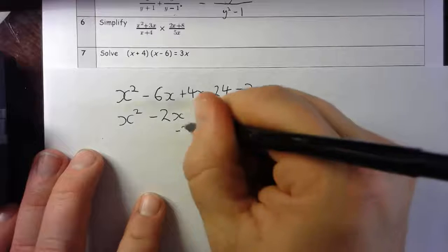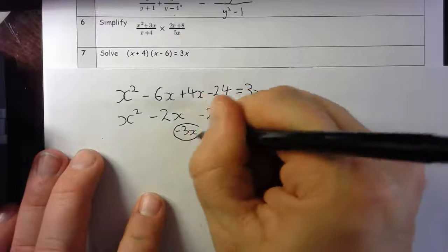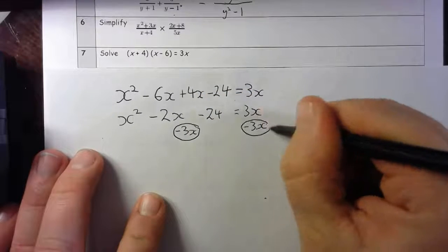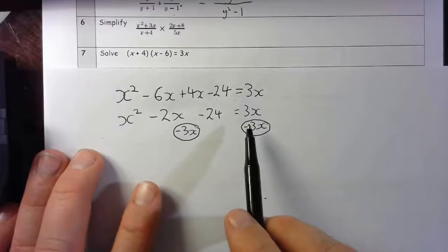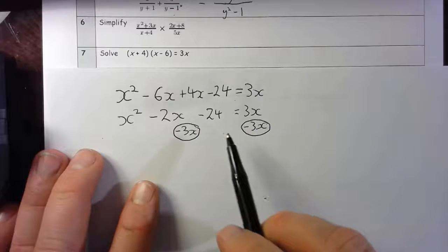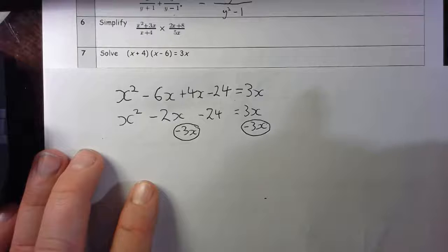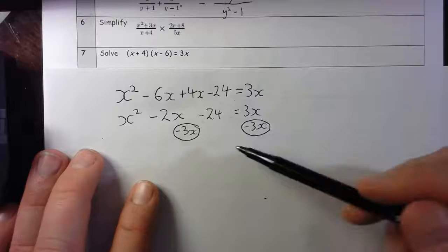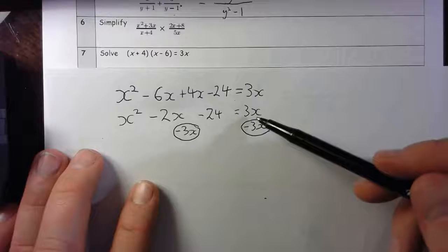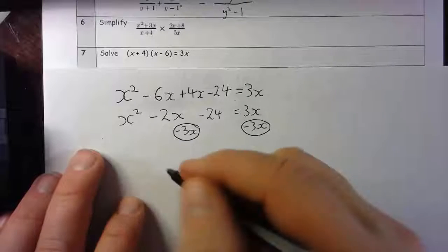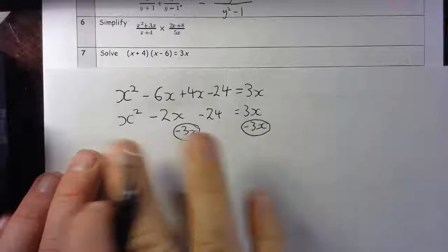I'm going to take away 3x from both sides. The reason why I'm doing that is I want it equal to zero if I'm going to factorize to solve, or even any of the other methods. I need it equal to zero really.